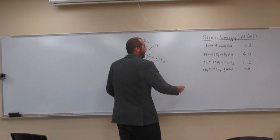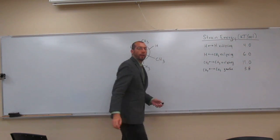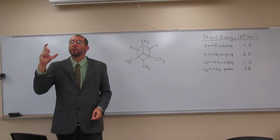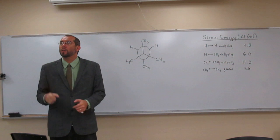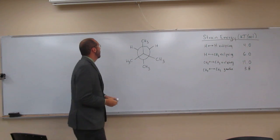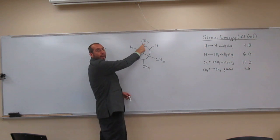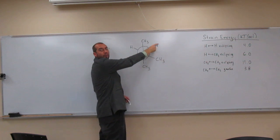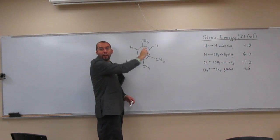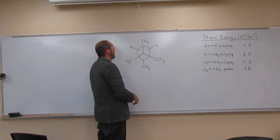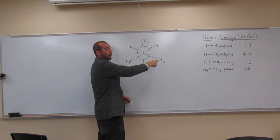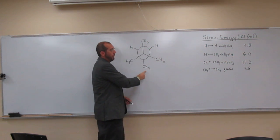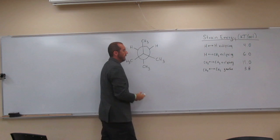So now we've got to look for the gauche ones. And remember, that's where the two big groups are 60 degrees away from each other. So if we see we have the methyl group here and the hydrogen, well, that's not going to show that interaction. So we just go around and look for those. Methyl group to a methyl group gauche, yep, there's one of them.